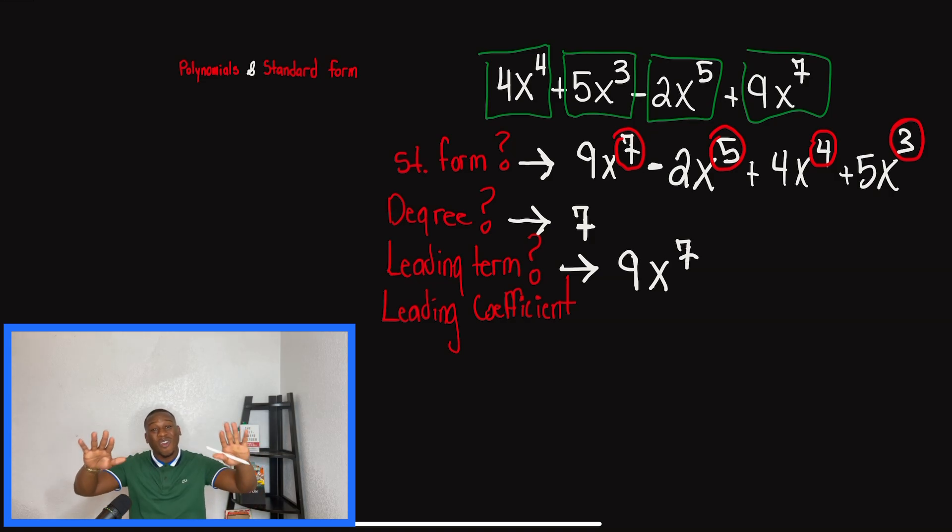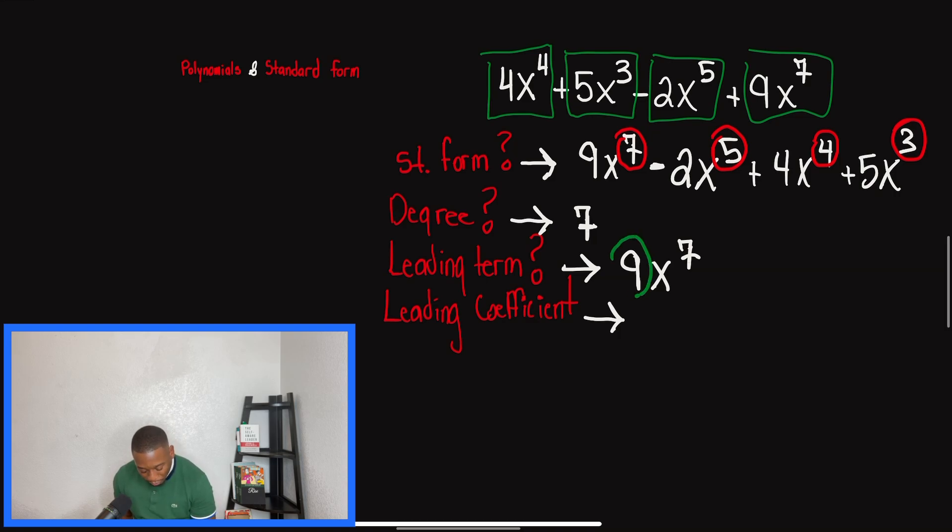Now, we're still getting this wrong. And the thing is, they know it where they get it wrong is they don't look into the problem. So the last question says, what is the leading coefficient? So remember, the leading coefficient is the same thing as the leading term. But remember that the coefficient is only the number in front of the variable. So if they ask us for the leading coefficient, that means it's just the number in front of the highest exponent. So in this problem, the leading coefficient is nine.